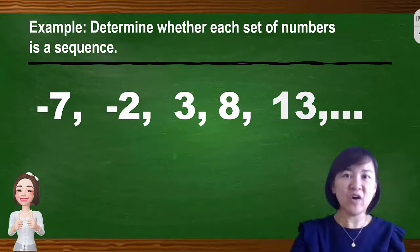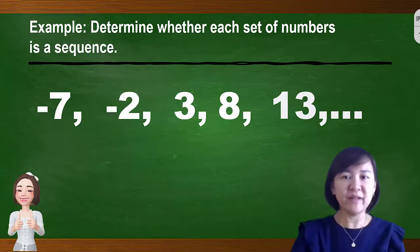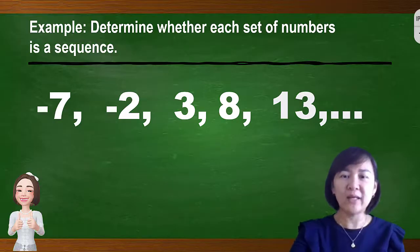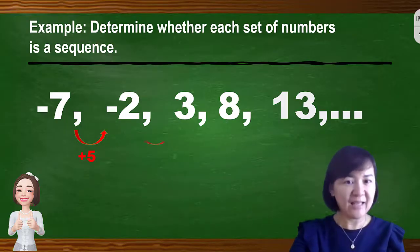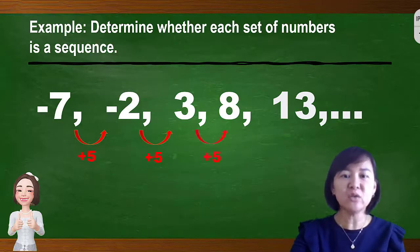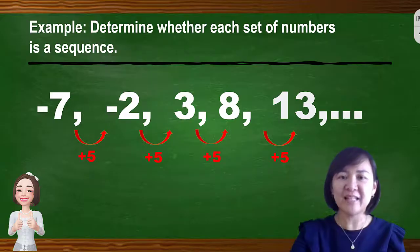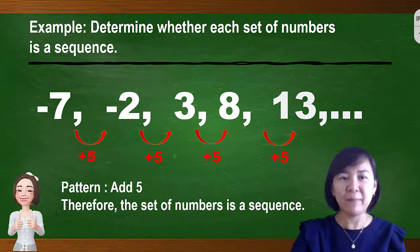One more example: the set of numbers is negative 7, negative 2, 3, 8, and 13. Is this a sequence? We determine the pattern. From negative 7 to negative 2 is plus 5. From negative 2 to 3 is also plus 5. From 3 to 8 is plus 5, and from 8 to 13 is also plus 5. There is a consistent pattern of plus 5. Therefore, this set of numbers is a sequence.